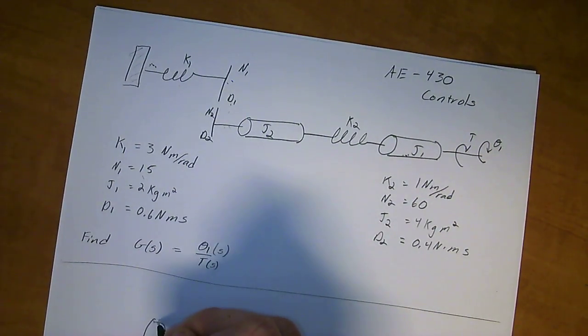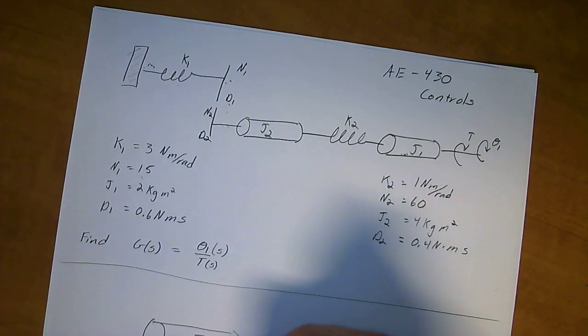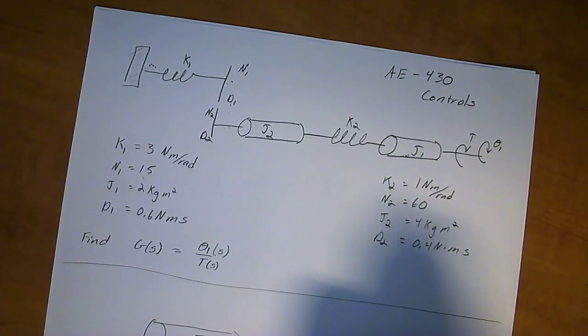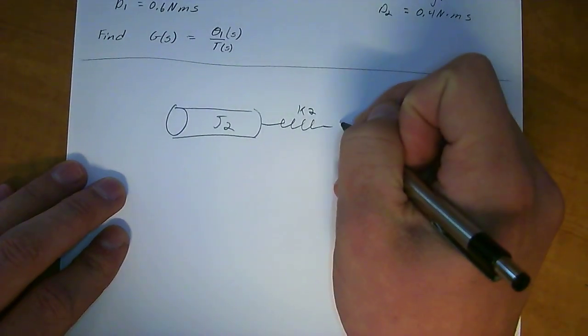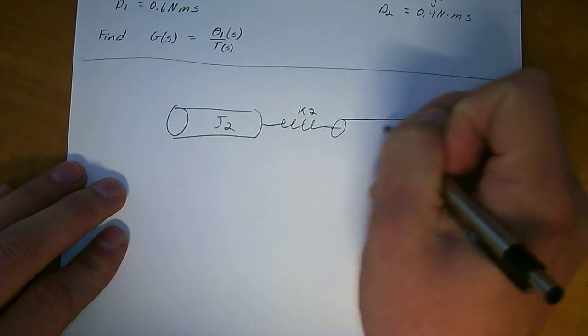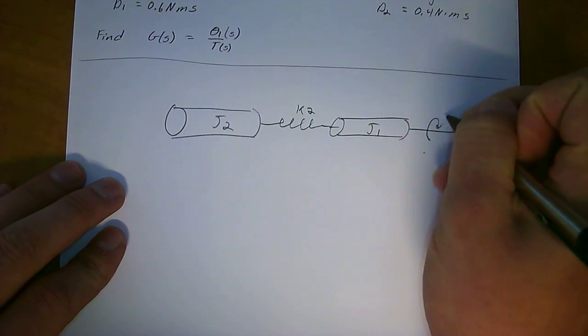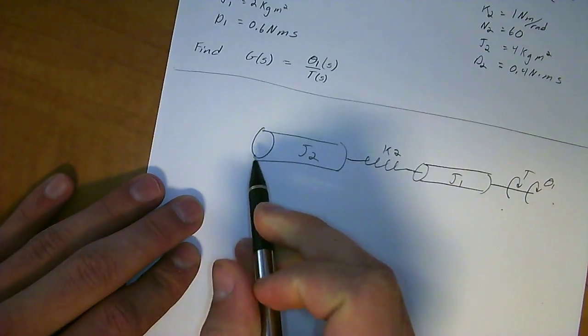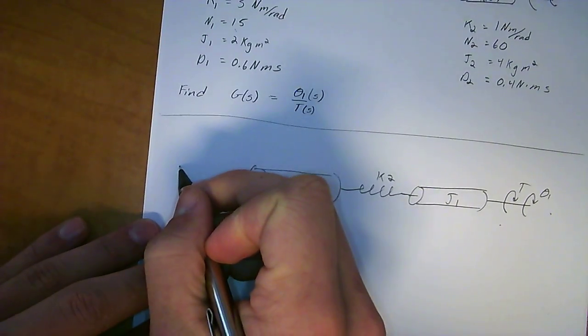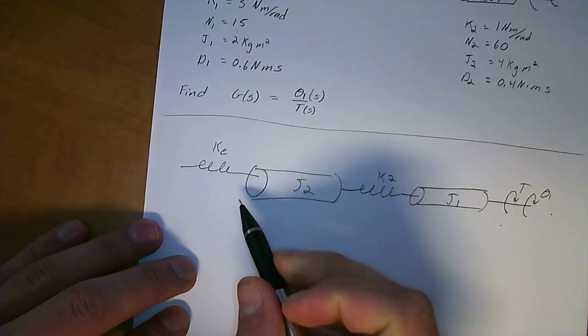I'm going to draw this out for you. So we're going to have J2 to the spring of K2. You can't even see what I'm doing here. J2, going over to J1, just like this. And the torque stays the same. The mass J1 stays the same. But then over here, we transfer the spring through. And we're going to call it K-equivalent, just like that.